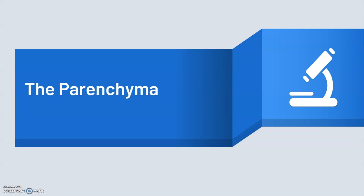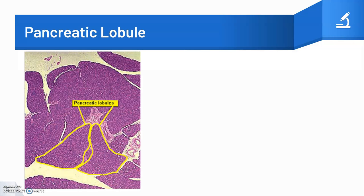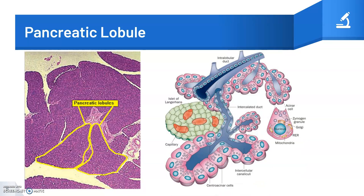The parenchyma is made up of different structures. One of them is the pancreatic lobule, which is composed mostly of acinar tissue. Islets of Langerhans and pancreatic duct branches are also present. The exocrine component makes up the vast majority of the lobule.